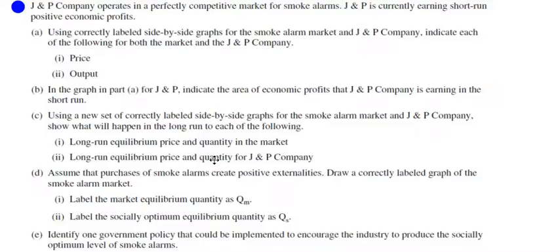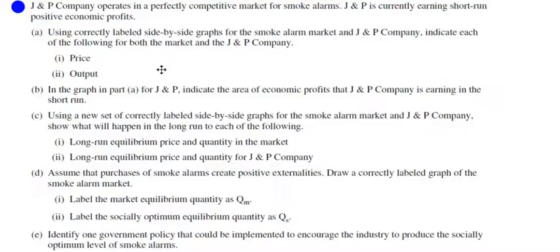In this video I'll be talking about problem one in your homework, which is a free response question from a prior AP exam. Before I show you the graphs, stop the video and see if you can graph these on your own. In this first part, we're looking at a perfectly competitive market for smoke alarms where J&P company is currently earning short-run positive economic profits. We want two correctly labeled side-by-side graphs for both the market and the firm.